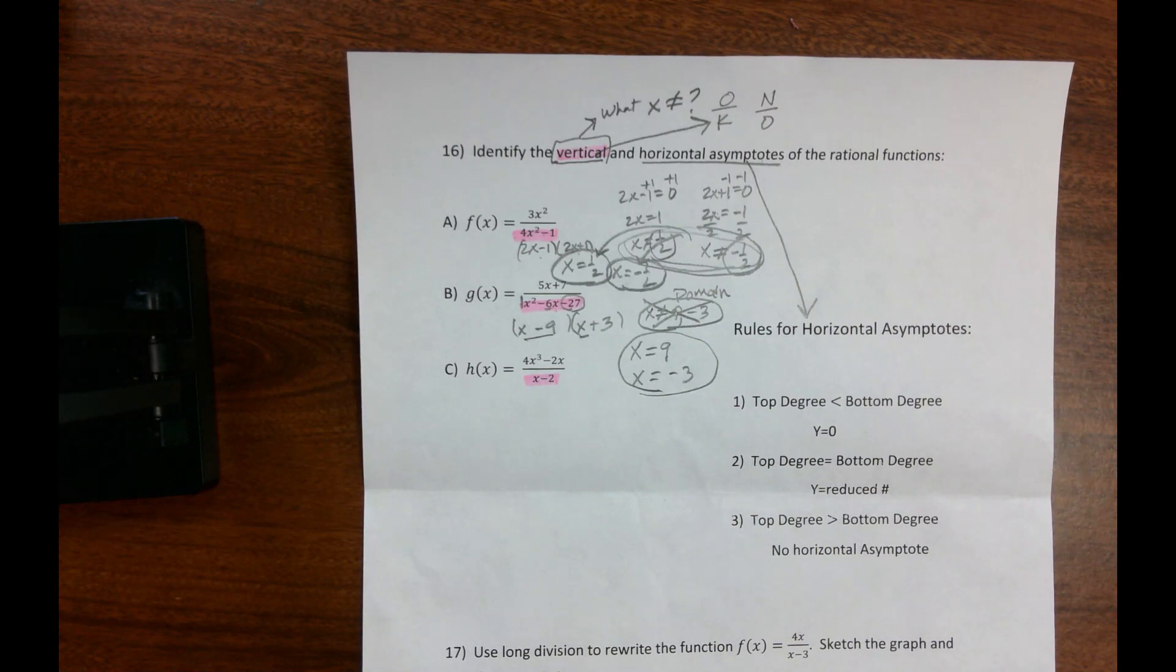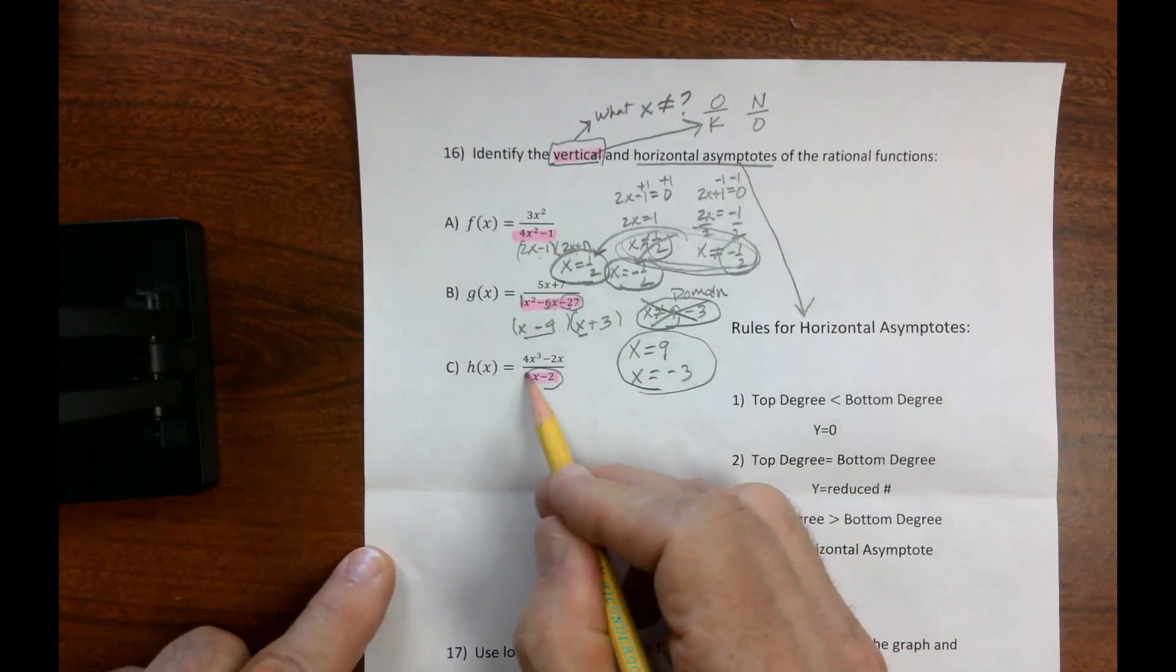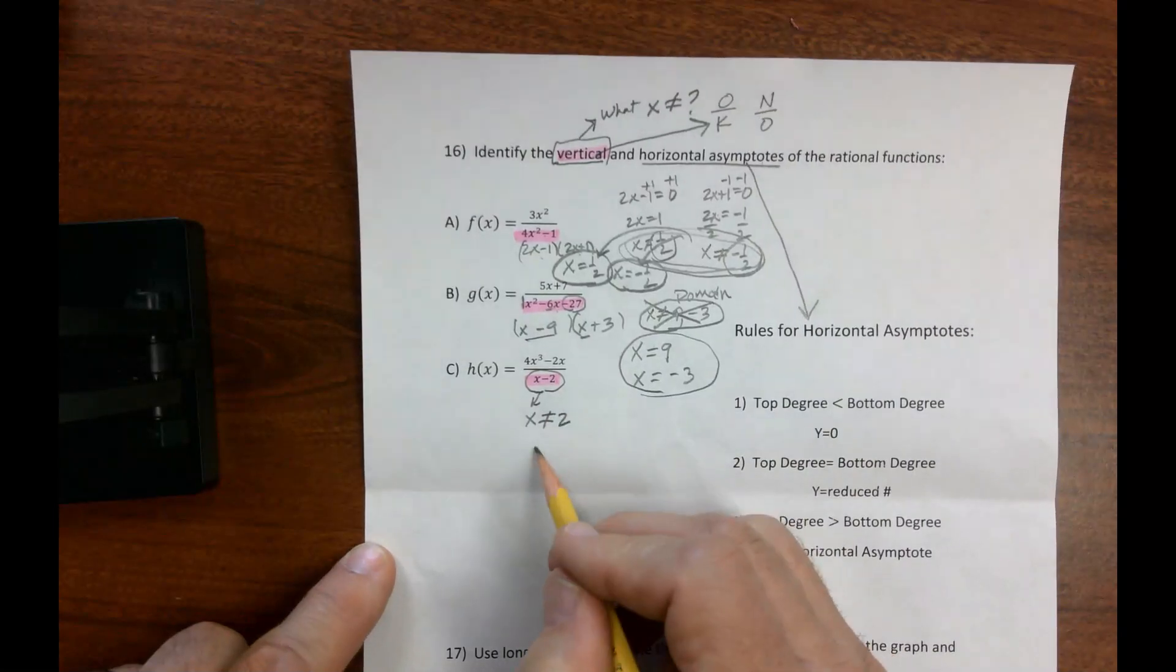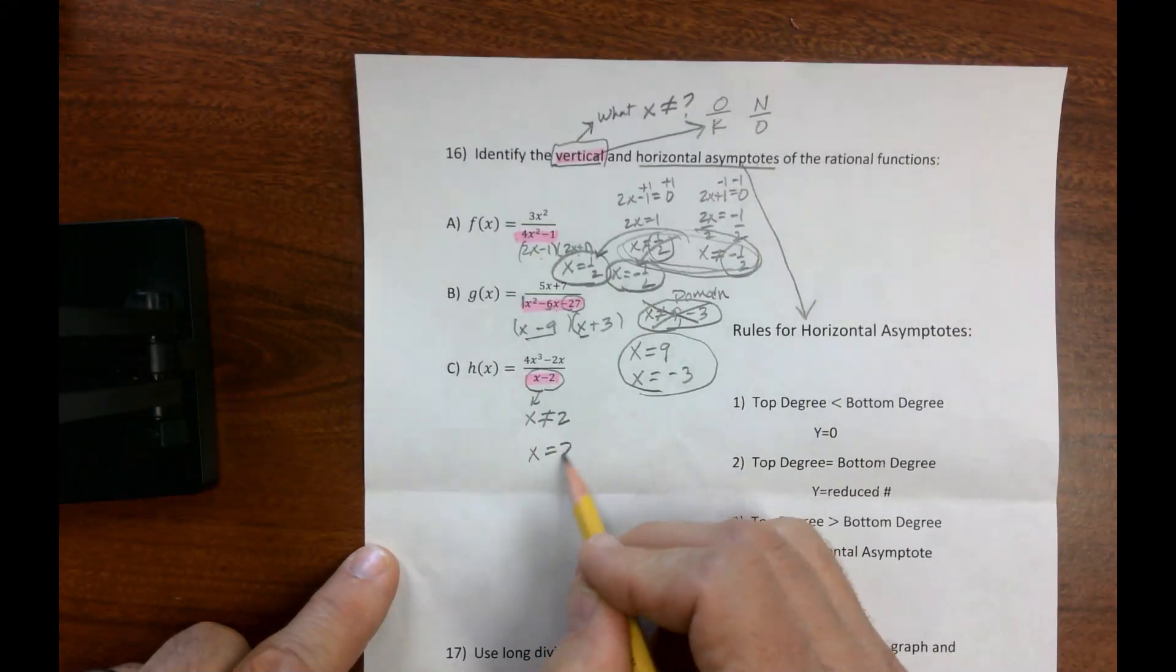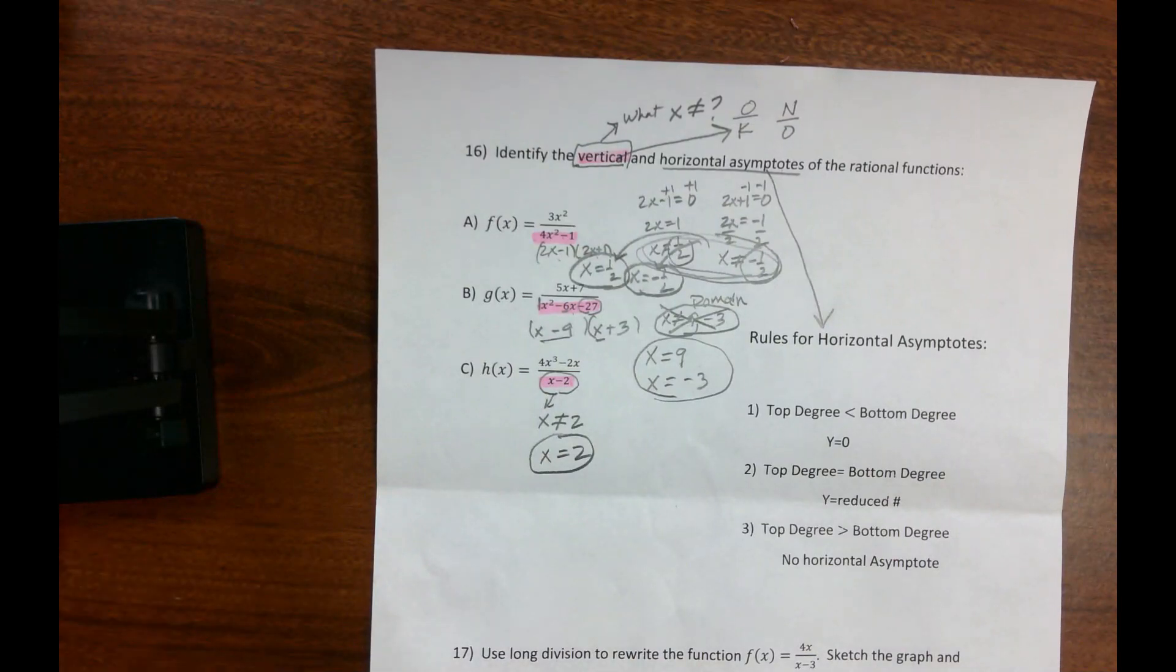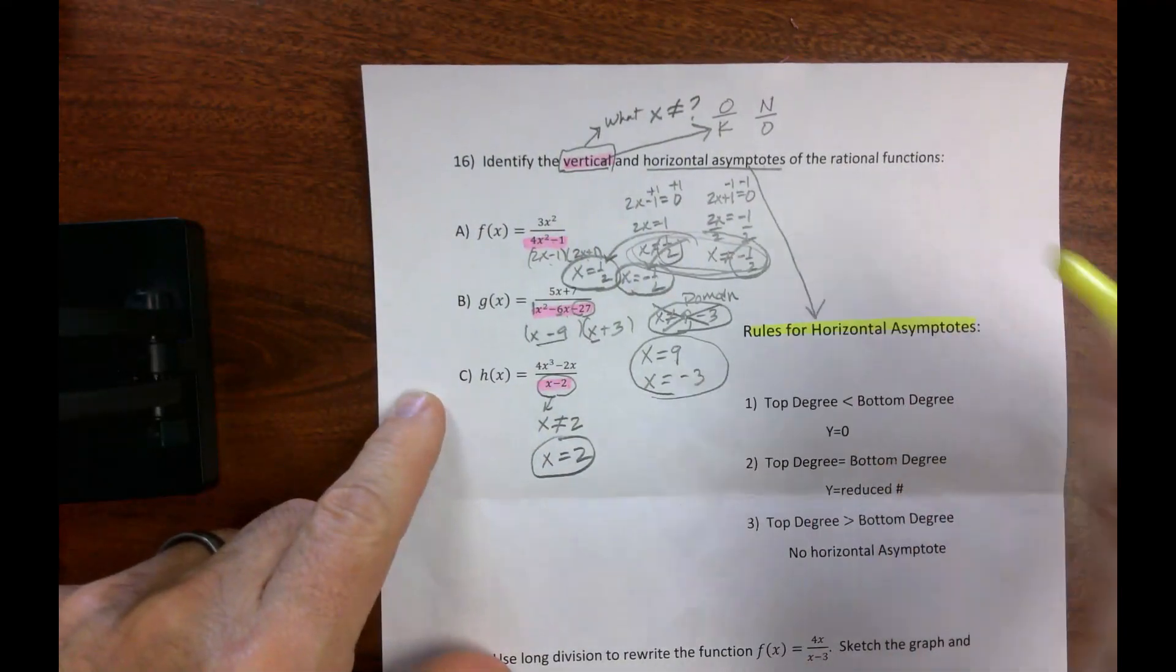Kind of interesting. Last one I made super easy, we know that x cannot equal 2, therefore, our vertical asymptote is x equals 2. Alright, now let's go into rules, rules for horizontal asymptotes.